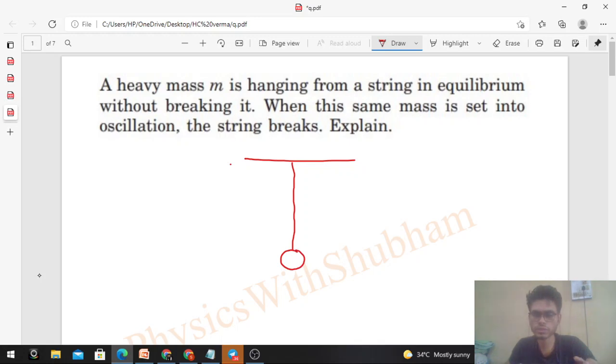So when a string is just stationary, in equilibrium, you can write the net force on this small m to be zero. Then what will be the tension on this string? Upward tension and downward mg, so the value of tension will be equal to mg.